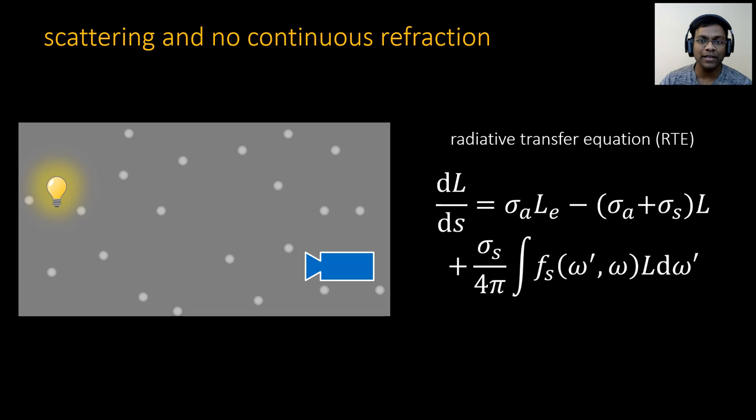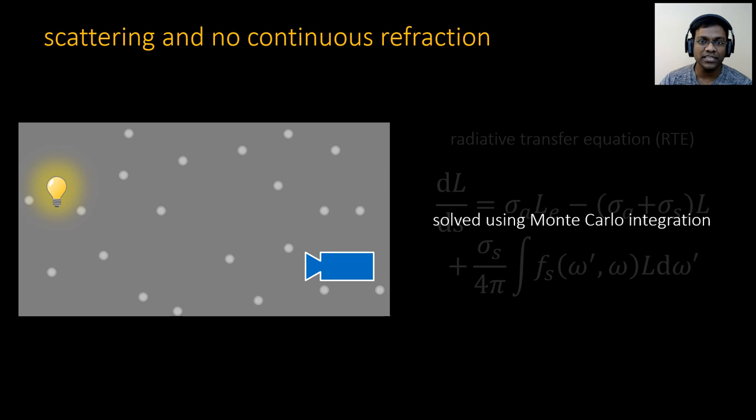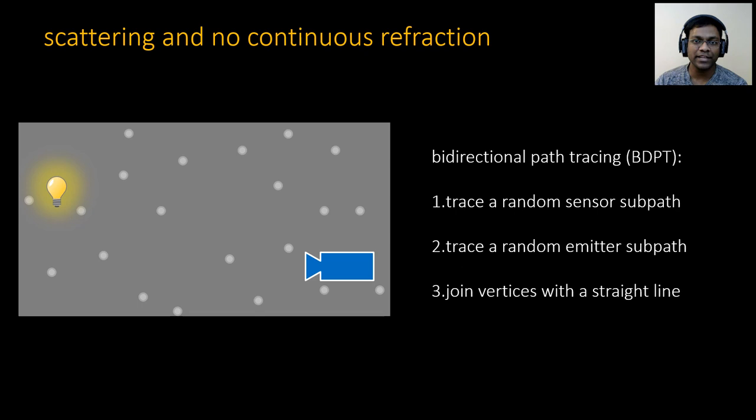If the medium has only scattering and no continuous refraction, we model light transport using the radiative transfer equation. This equation is typically solved with Monte Carlo integration using techniques such as bidirectional path tracing.